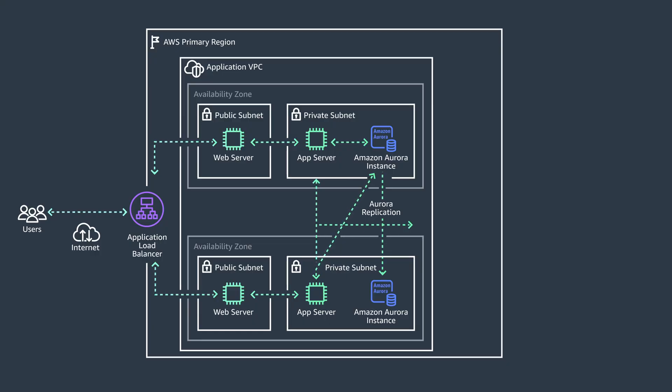With AWS, you can use DynamoDB as an intermediate database to help with this load. DynamoDB automatically scales tables to adjust for capacity and maintains performance without server administration. It scales globally to support petabytes of data and tens of millions of read and write requests per second. With that in mind, you can move the heavy write load and the application session state to DynamoDB tables, making use of features like composite partition keys, sort keys, and write sharding to distribute the load into different partitions.